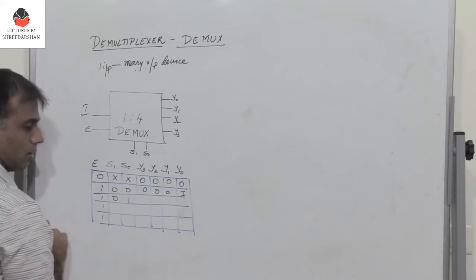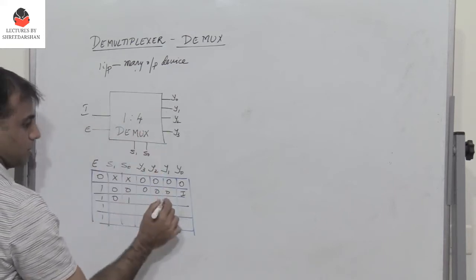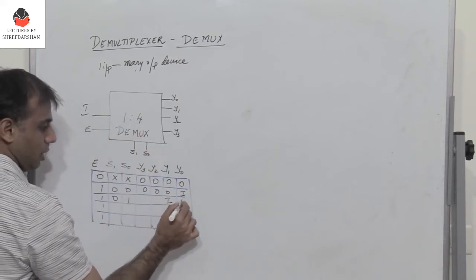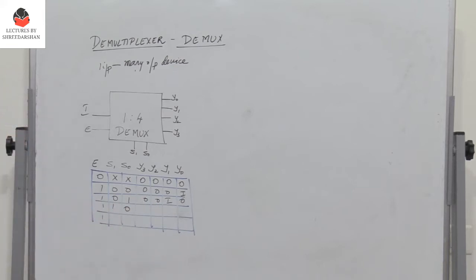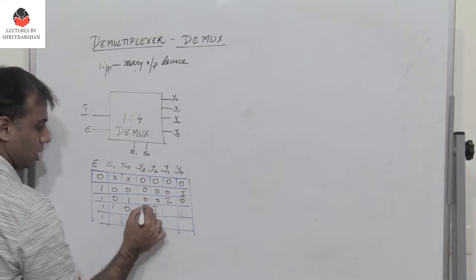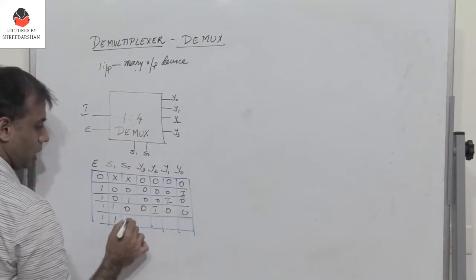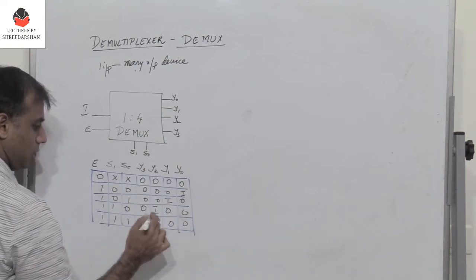If I have 0, 1, s1 is 0, s0 is 1, the input i appears at y1 and the others are 0. If the select lines are 1, 0, the input i appears at y2 and the others are 0. And then 1, 1, you have the input appearing at y3 and the remaining 3 are 0.